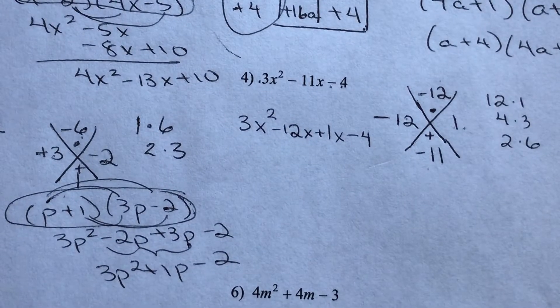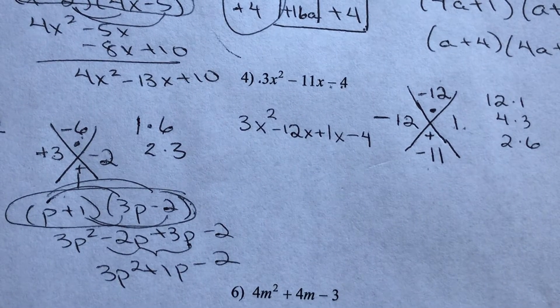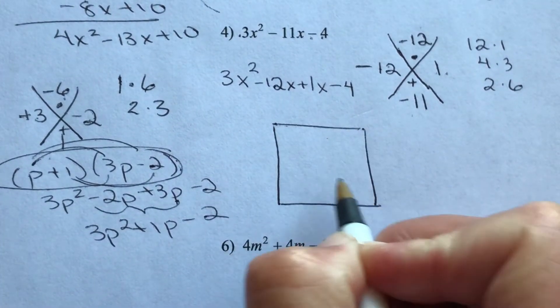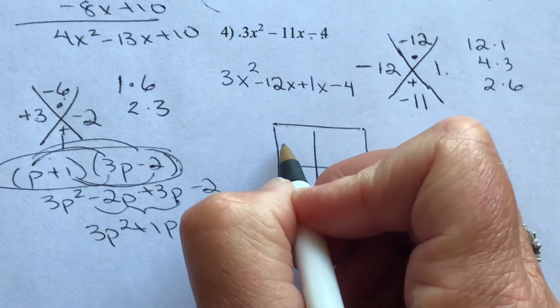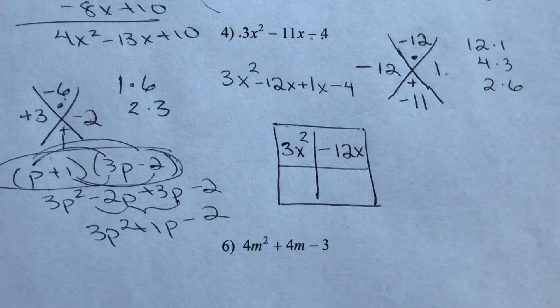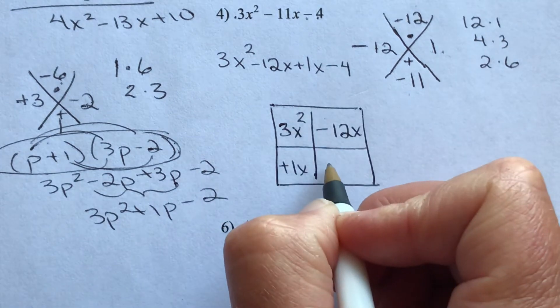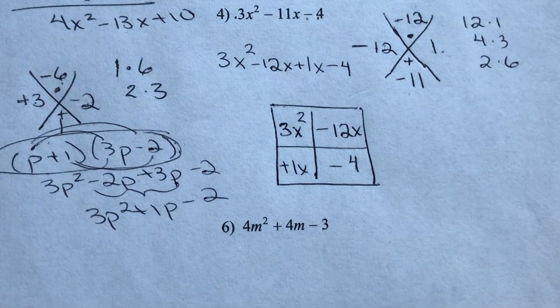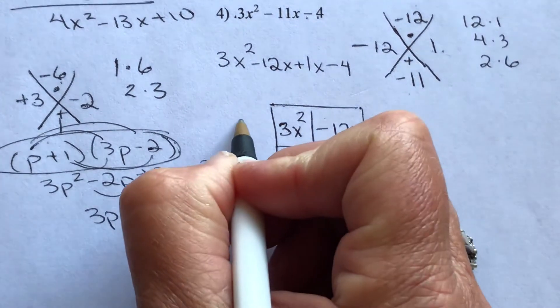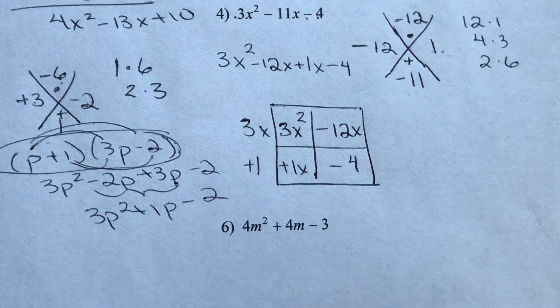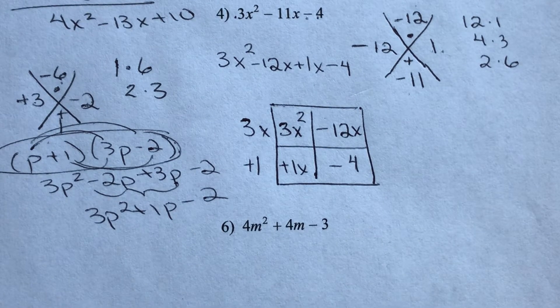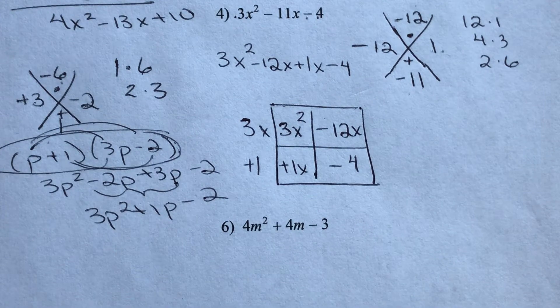So now we have our four term polynomial. We already know how to factor a four term polynomial. We're using that Punnett square. So let's go for it. So our first term is 3x squared. It goes in the first box. Second term is negative 12x. The sign's important, so make sure you include it. Positive 1x and then negative 4. We're going to find the GCF of each row and each column.